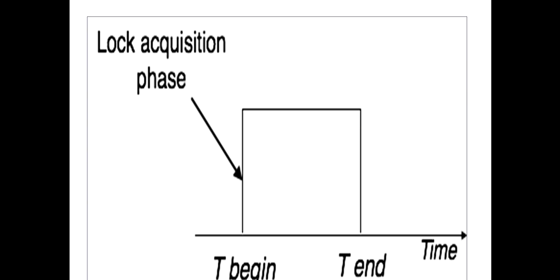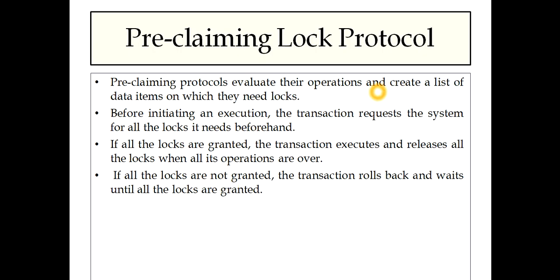This straight line represents where the executions or operations are taking place. I hope this figure is clear. Any doubts, you can ask me — by phone or by mail. So, the pre-claiming log protocol is clear.